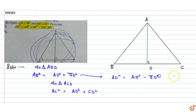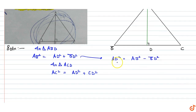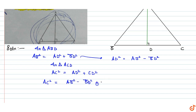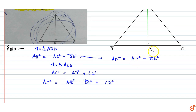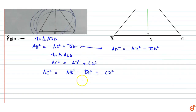We will put the value of AD square in this equation, so AC square is equal to AB square minus BD square plus CD square. For the CD term, we will substitute CD equals BC minus BD.